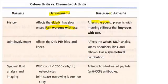Rheumatoid arthritis affects the young and is an autoimmune problem in which IgM is directed against the Fc portion of IgG — this is called the rheumatoid factor. It presents with morning stiffness that improves with use. Joint involvement: osteoarthritis affects the DIP, PIP, hips, and knees; rheumatoid arthritis affects the wrist, MCP, ankles, shoulders, hips, and elbows, with a symmetrical distribution including ulnar deviation.